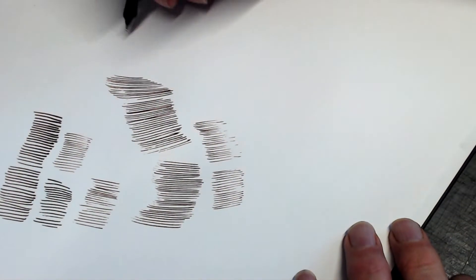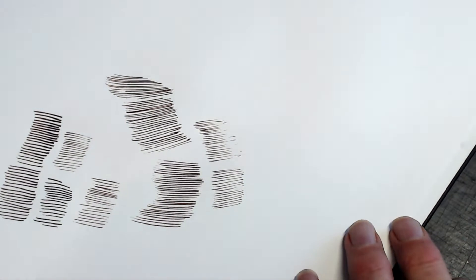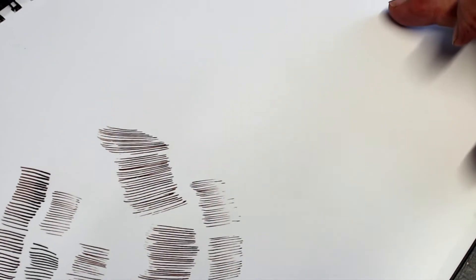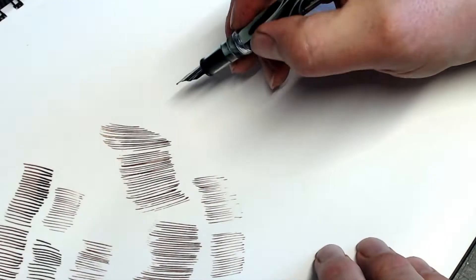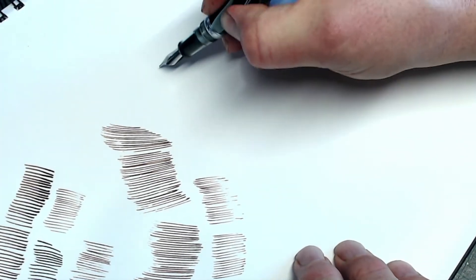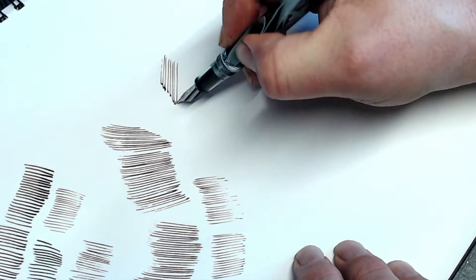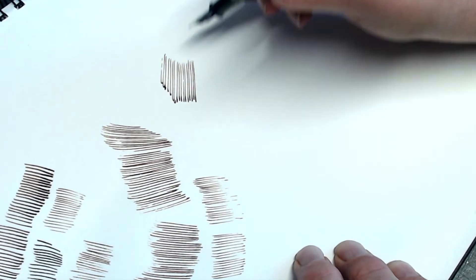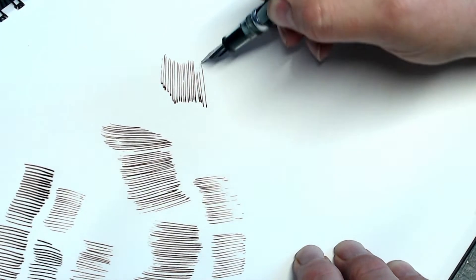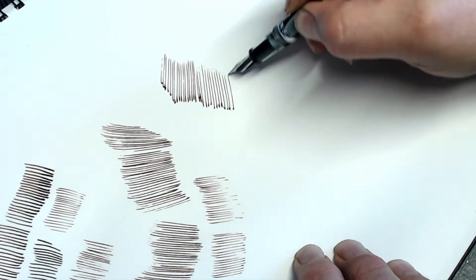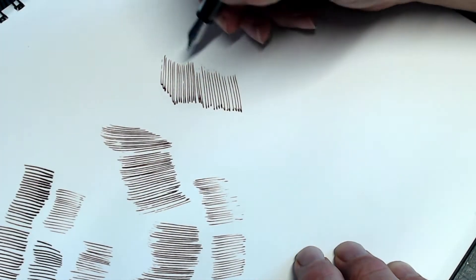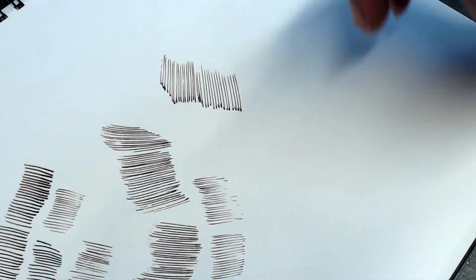All right, let's do some other different kinds of hatching. So let's hatch from a different direction. This is very long hatching using the elbow. Okay, you can see it works fairly well. It skips a little tiny bit, not too big an issue.